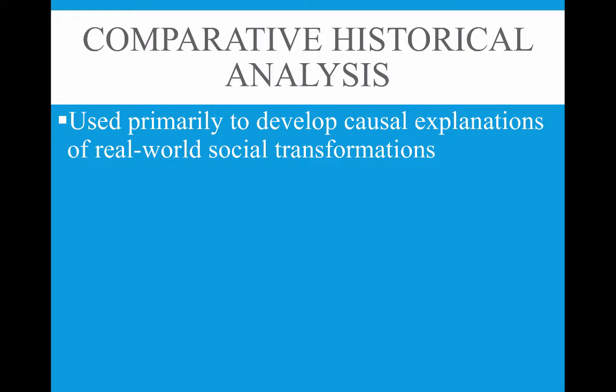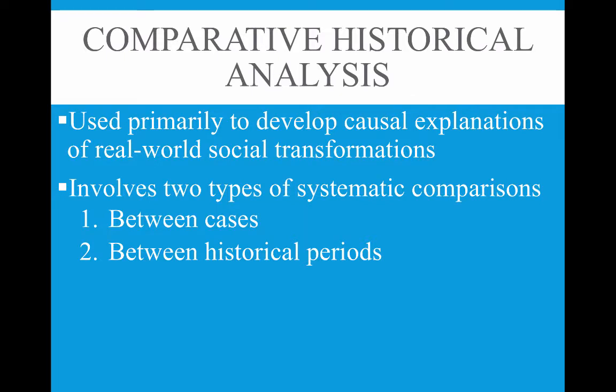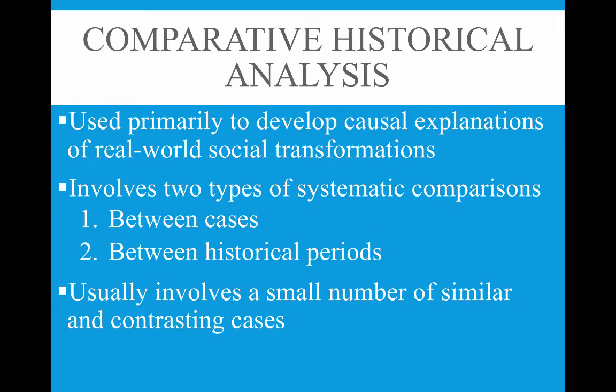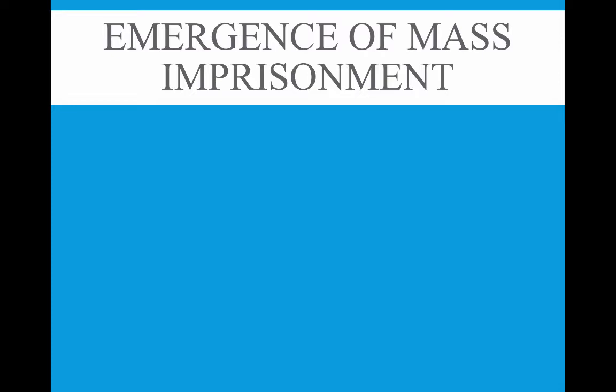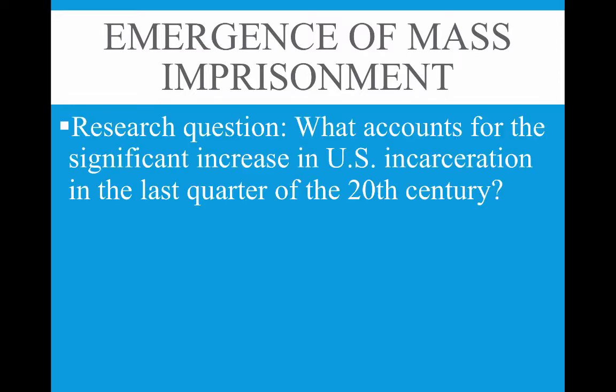Comparative historical analysis involves two types of systematic comparisons: between-case comparisons and between-historical-period comparisons. It usually involves a small number of similar and contrasting cases based on analysis of existing data. For example, for about a hundred years, incarceration rates in the US stayed around 100 inmates per 100,000 people, but in the last quarter of the 20th century — since the late 1970s — there was a massive increase. Researchers asked: what accounts for the significant increase in US incarceration in the last quarter of the 20th century?